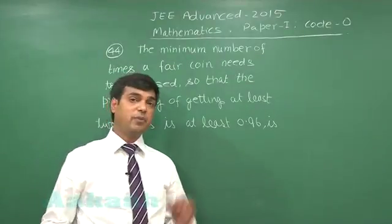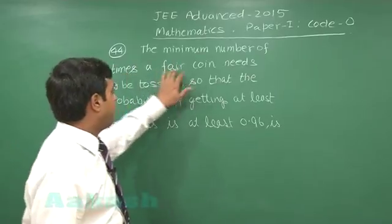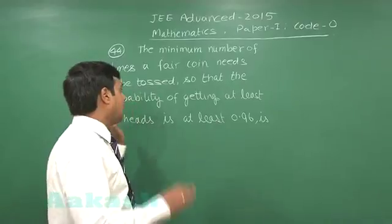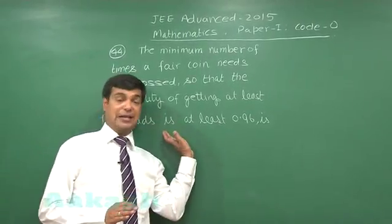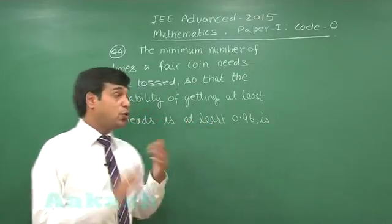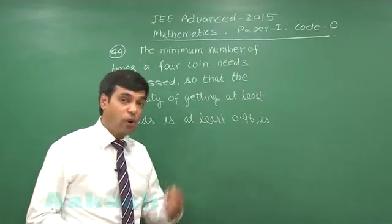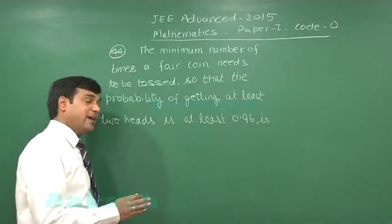Let's go for question number 44. The minimum number of times a fair coin needs to be tossed so that the probability of getting at least two heads is at least 0.96. I have to find the minimum number of times we need to toss a coin such that the probability of getting at least two heads is at least 0.96.